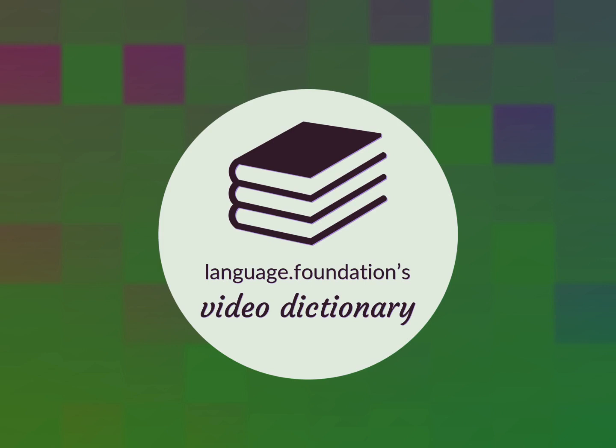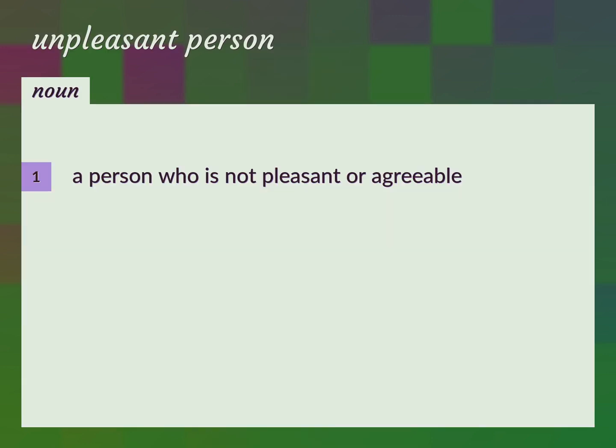Language.Foundation's Video Dictionary, helping you achieve understanding. An unpleasant person is a person who is not pleasant or agreeable — also referred to as a disagreeable person.